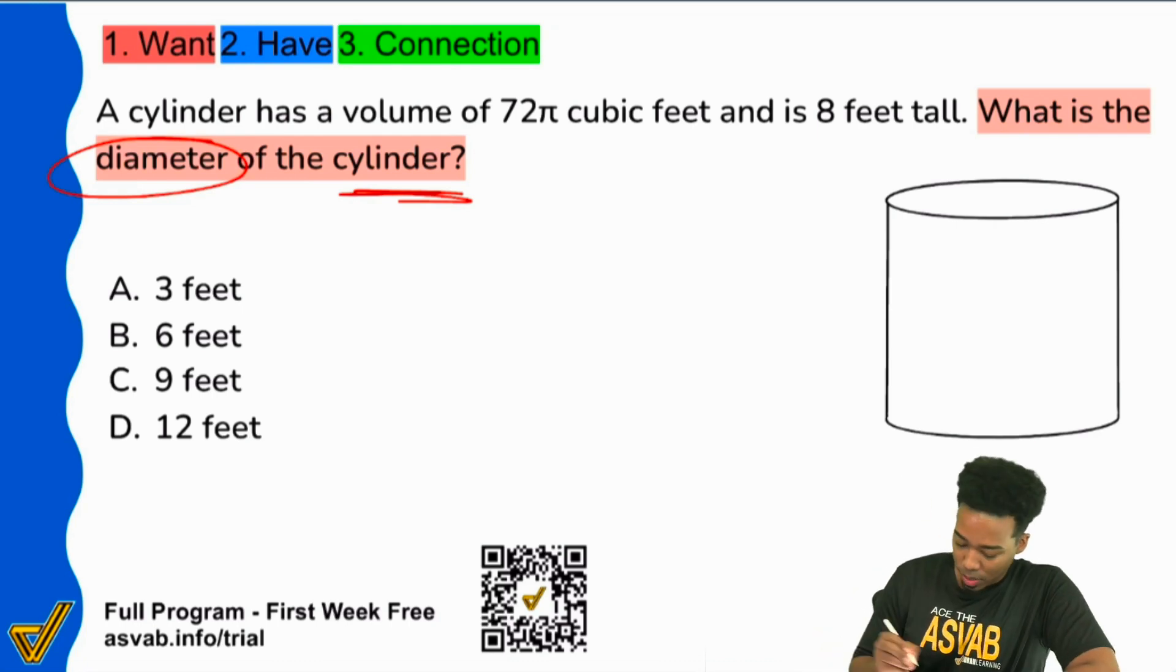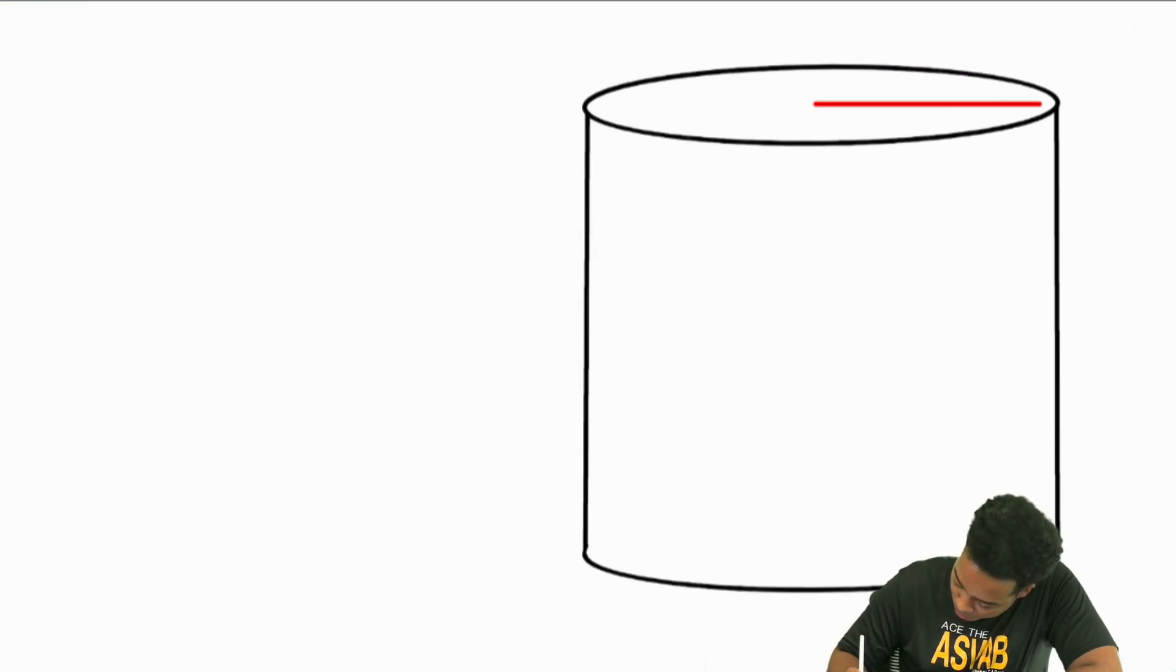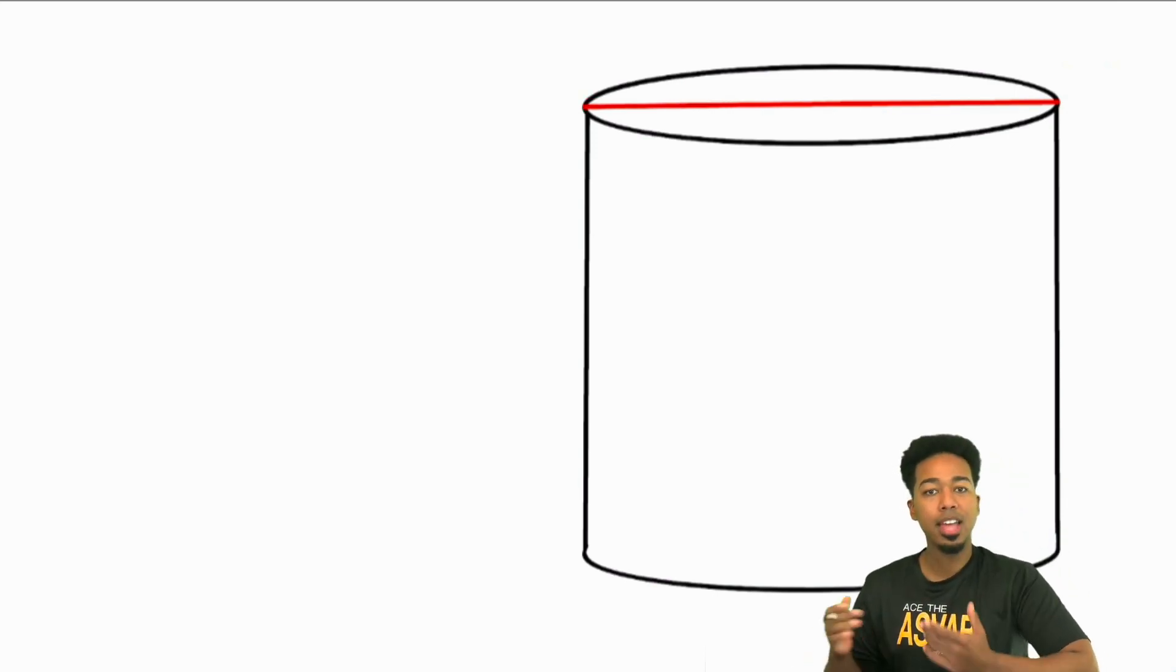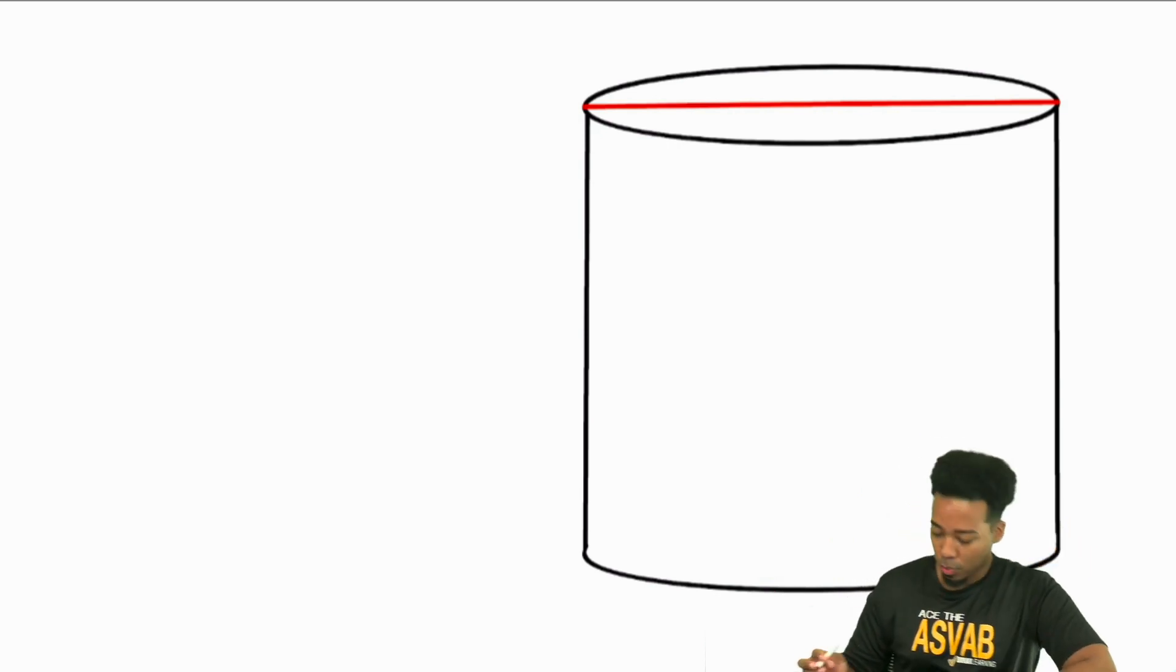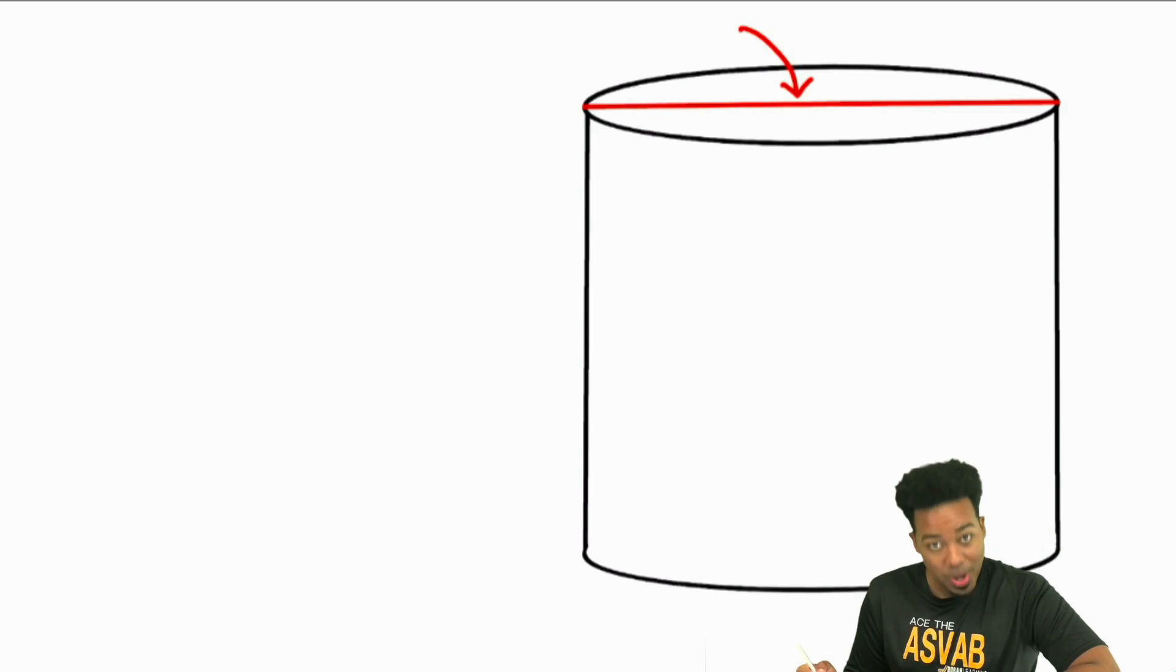When it says, what is the diameter of the cylinder, the diameter is located right here. The diameter is essentially going across the cylinder. It is the diameter of the circle. The diameter of a cylinder is the diameter of the circular part. The diameter goes across the circle through the middle. So we just want to know what this is.